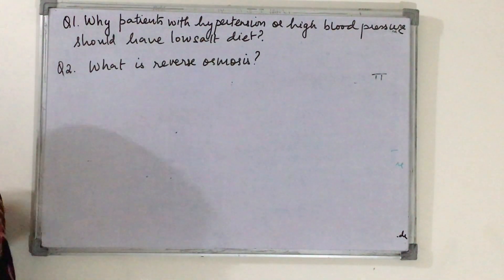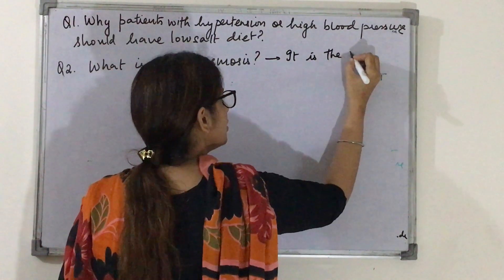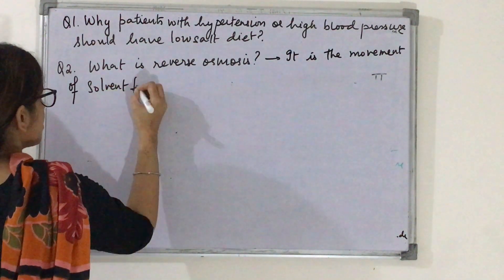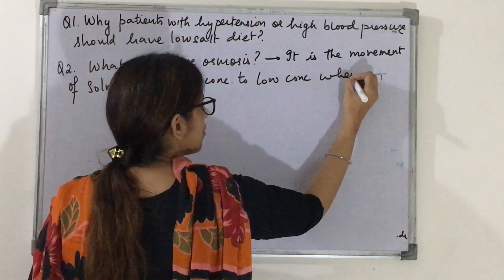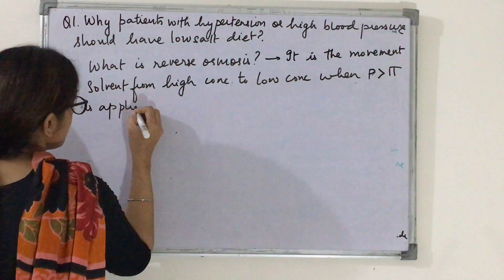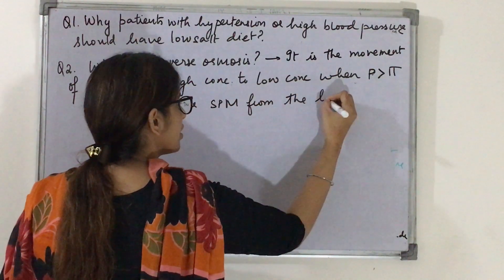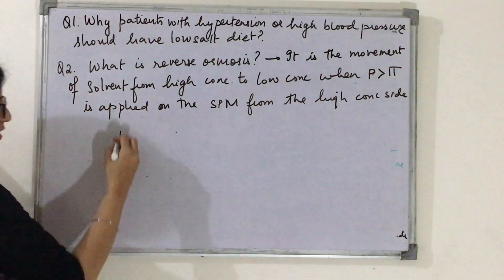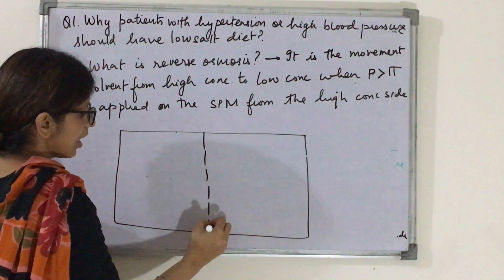Reverse osmosis is the movement of solvent from high concentration to low concentration when pressure greater than osmotic pressure is applied on the semi-permeable membrane from the high concentration side. Take a screenshot of this definition.